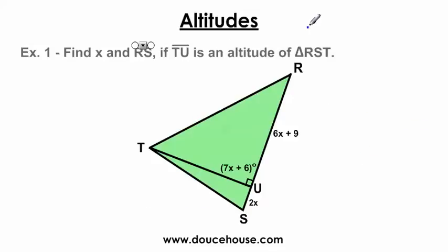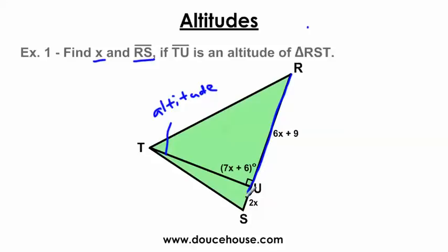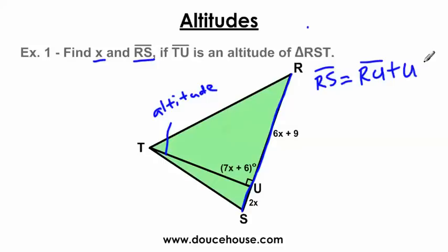Let me make this a little more challenging. We have a problem where we need to find X and also the length of segment RS, if TU is an altitude of triangle RST. We know this segment here is an altitude. We need to find X using the same approach as before. We also need to find the length all the way from R to S. Segment RS is equal to segment RU plus the length of segment US. So if I add segment RU and segment US together, I can find the entire length of RS.